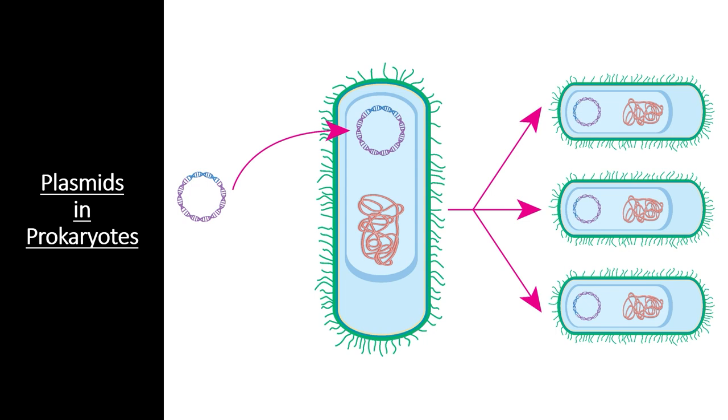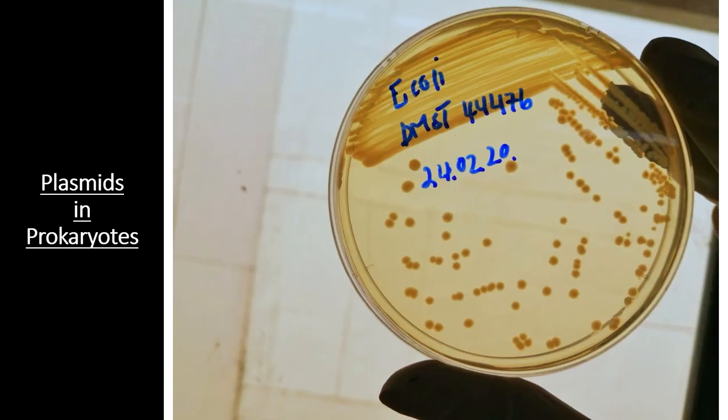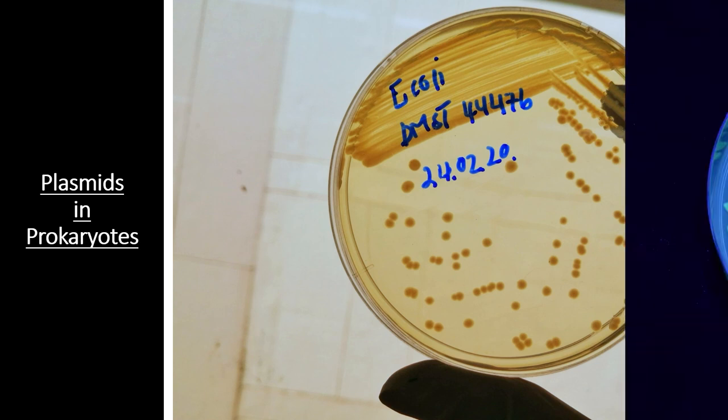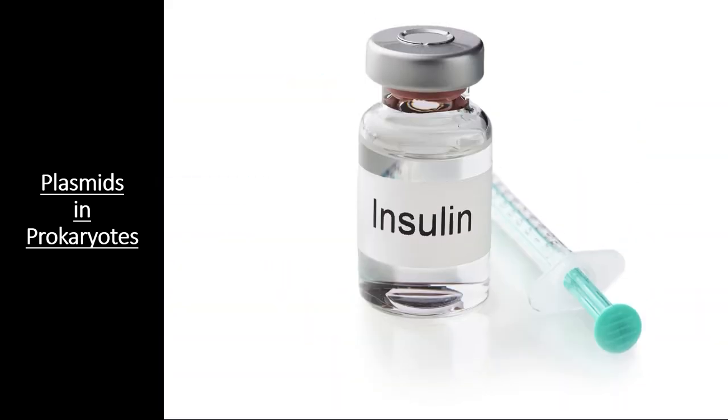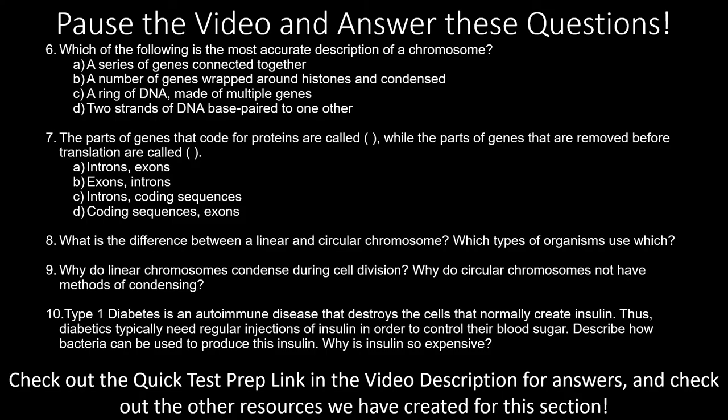In a simple example, scientists were able to take normal E. coli bacteria and introduce a gene that causes fluorescence in jellyfish. When this plasmid is successfully incorporated into a colony, the whole colony glows green. But this cool trick can also be used for more important reasons than just getting bacteria to glow. Human insulin, an important protein hormone used as medicine by people with diabetes, is produced by bacteria that have been transformed with recombinant DNA.